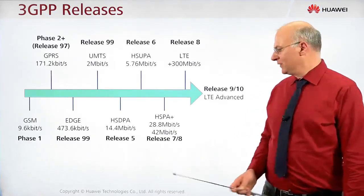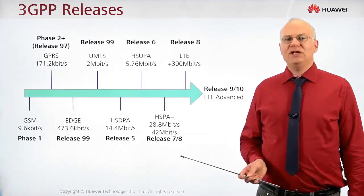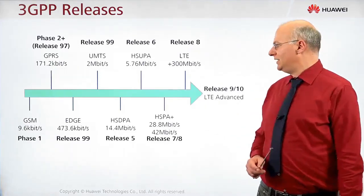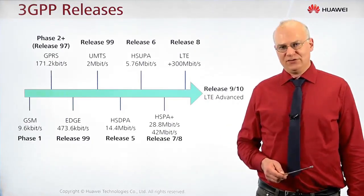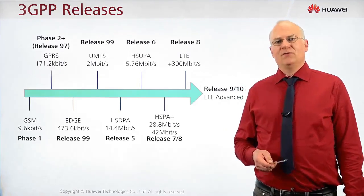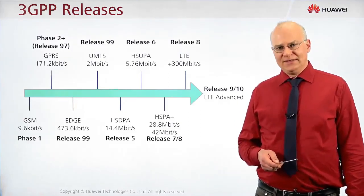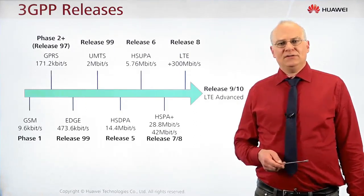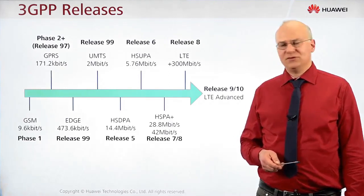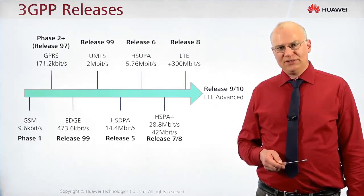HSPA+ offers data rates up to 42 megabit per second. The 3GPP Release 8 was the first release introducing LTE with data rates up to 300 megabit per second. The next important release after Release 8 is Release 10, introducing LTE Advanced. By 2016, Release 12 had been finalized and Releases 13 and 14 were already opened.